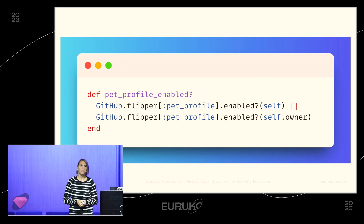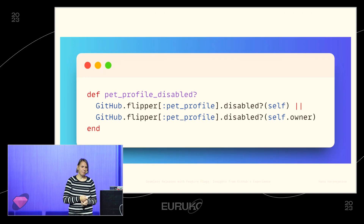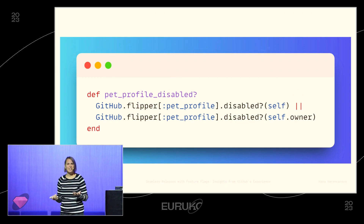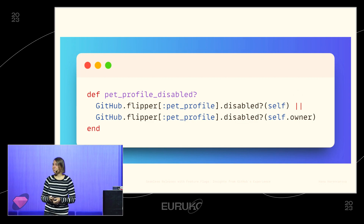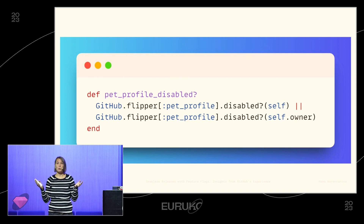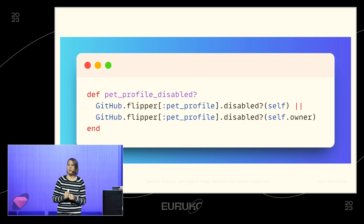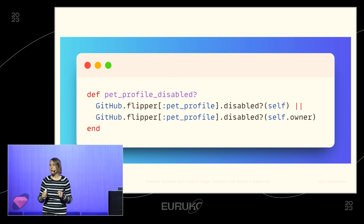We often also have a disabled feature flag. You might think it's the same thing, but almost — the way we use an enabled/disabled feature flag is: if we have a big group and want to enable the feature flag for the whole group, but you have a specific repository or person for whom you don't want the feature, we enable it for the big group and then with the disabled flag you can still disable it for individual actors or repositories.